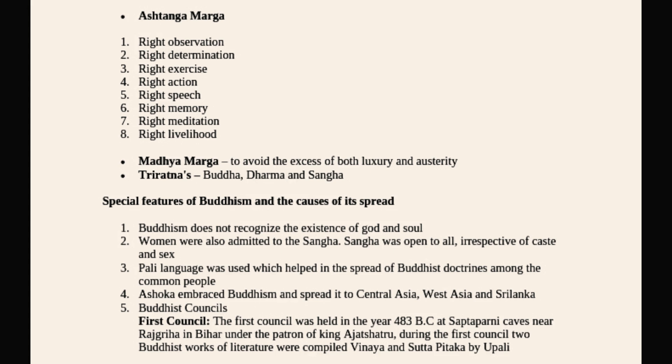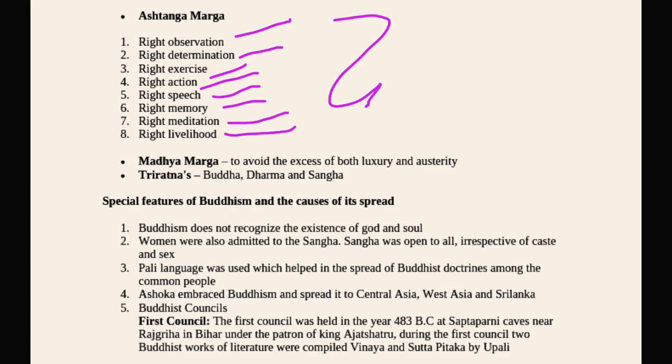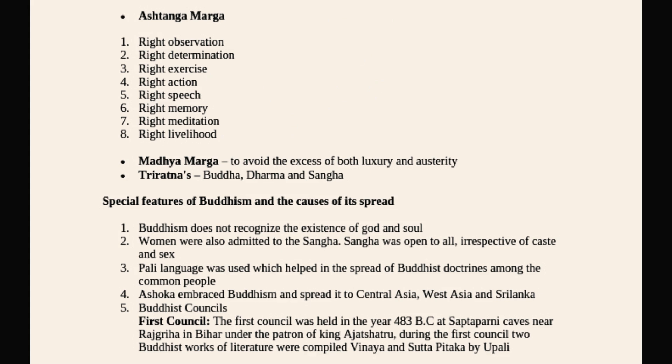Buddha also gave the Ashtangic Marg, which consists of eight paths: right observation, right determination, right exercise, right action, right speech, right memory, right meditation, and right livelihood. All eight together make the Ashtangic Marg.